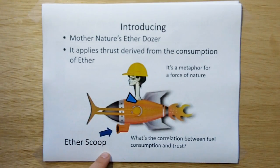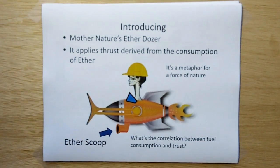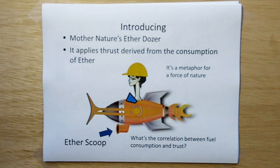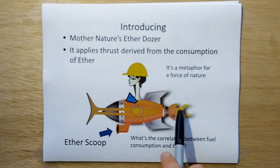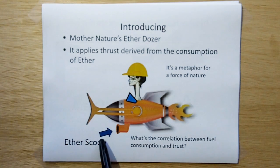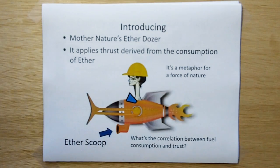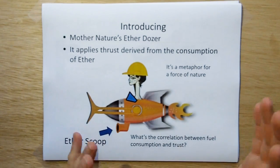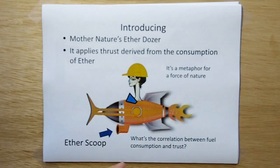So let me introduce to you a quote-unquote thought character. This is Mother Nature's ether dozer. And what it is, it's kind of like a little bulldozer, can apply thrust. And it's got a little ether scoop in the front where it scoops in ether and is able to apply force proportional to the ether. Now this is just a metaphor, okay, for a force of nature. Now the question is, what's the correlation between fuel consumption and thrust? Is there a correlation? What is the correlation?